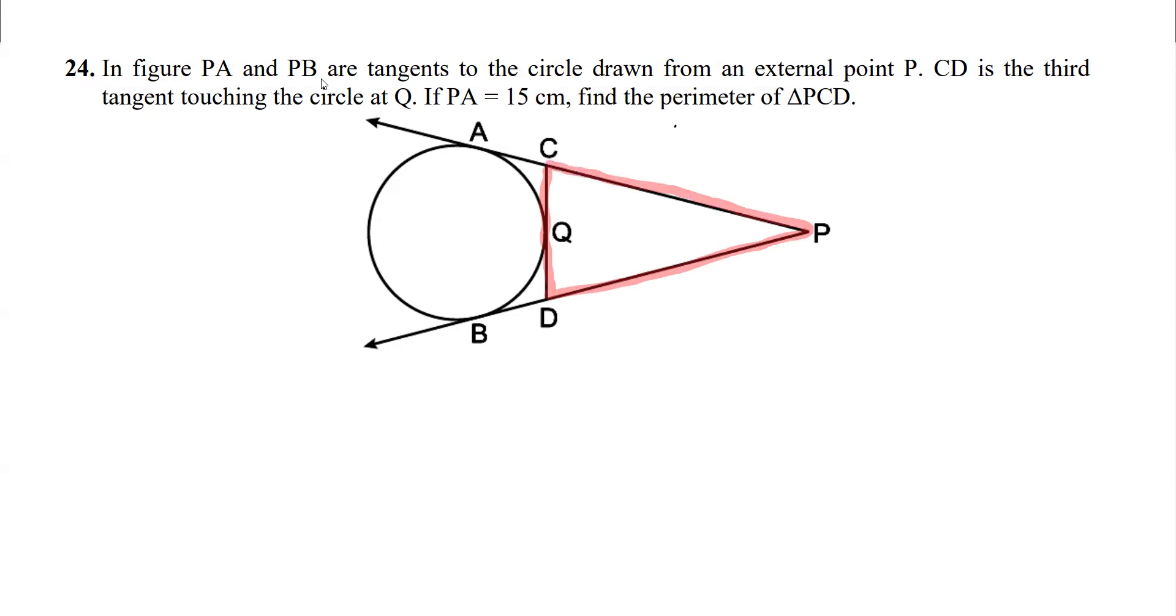If I take this as x, this is also going to be x. And if I take this as y, this is also going to be y. Let me write it down: AC is equal to CQ which is equal to x. The reason is tangent from same exterior point. Similarly, BD is equal to DQ which is equal to y, tangent from same exterior point.